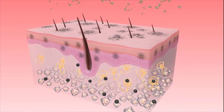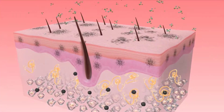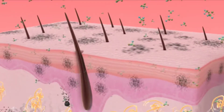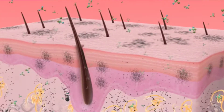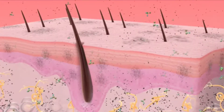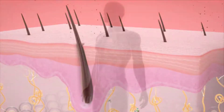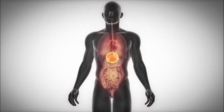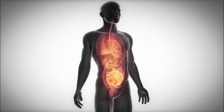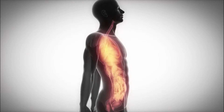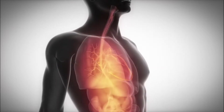Epithelial tissue, also referred to as epithelium, refers to the sheets of cells that cover exterior surfaces of the body, line internal cavities and passageways, and form certain glands.